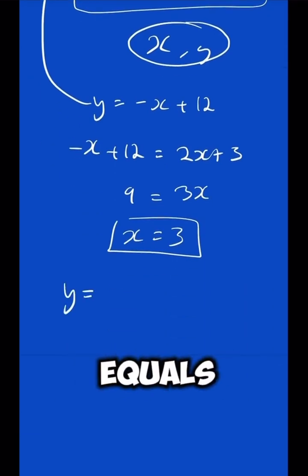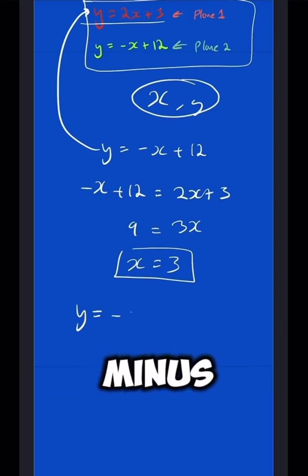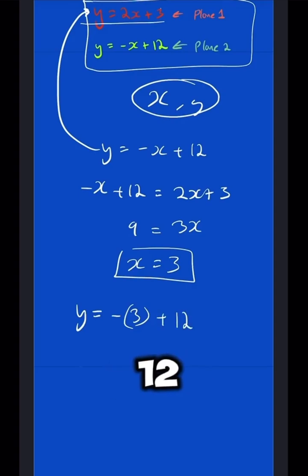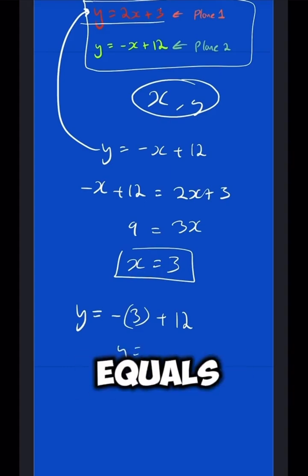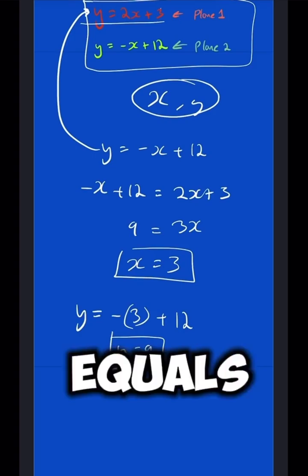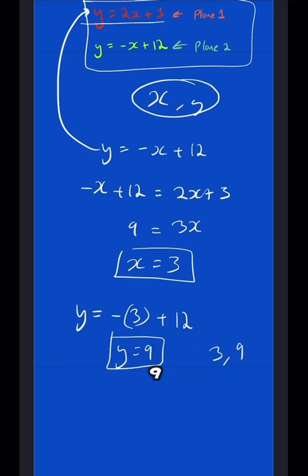So, y equals, and the equation was minus x, so it would be minus, and wherever I see x, I put a 3 in, and then 12. So, it would be minus 3 plus 12, which is going to be y equals 9. So, our coordinate is when x equals 3 and y equals 9.